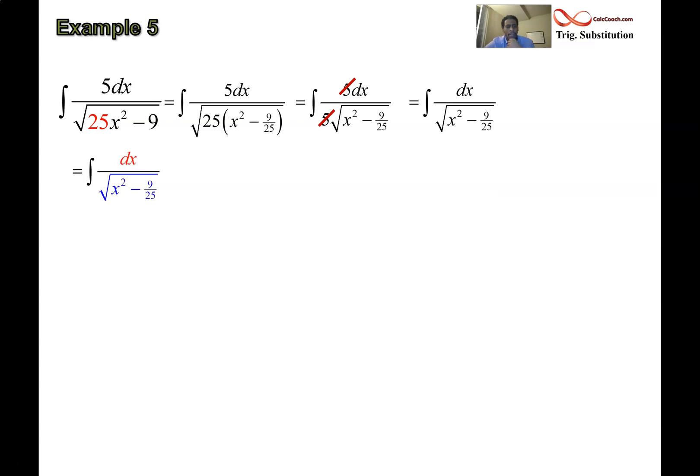x squared minus a squared is in that format. The value of a is the square root of 9 over 25, or 3 fifths. Let x equal 3 fifths secant theta. I don't have the steps in the pre, it isn't set up the same way as those other examples were, but we can just make our way through this. So, if x is equal to 3 fifths secant theta, we can solve for dx, and we can solve for the radical. dx is going to be 3 fifths secant theta tan theta d theta. The derivative of secant theta is there.